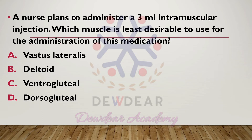A nurse plans to administer a 3 ml intramuscular injection. Which muscle is least desirable to use for the administration of this medication? Options are: vastus lateralis, deltoid, ventral gluteal, dorsal gluteal. The correct answer is option B — deltoid muscle is least desirable.